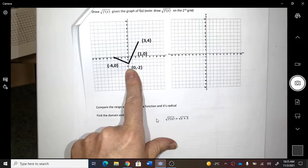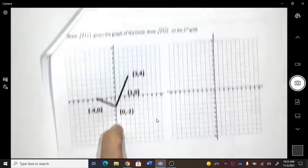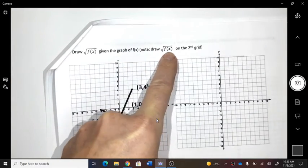Given this graph, this is me recapping. Given the graph here, graph the radical of it. Graph the radical of it.